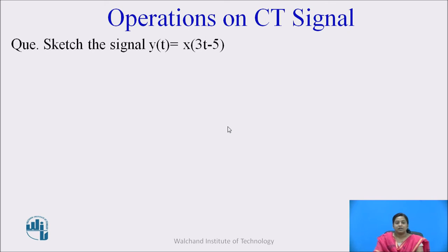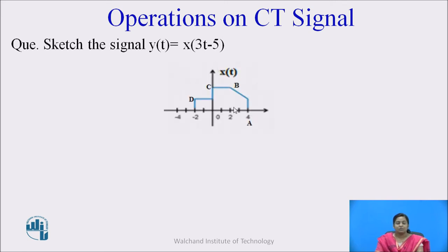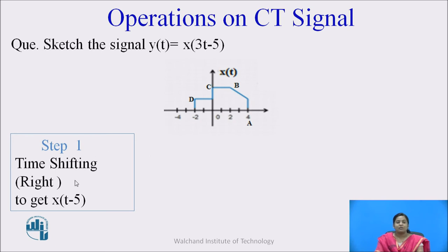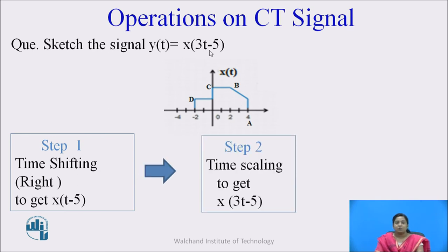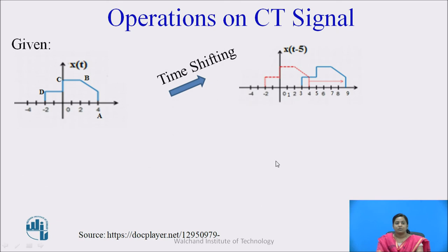Now let us see the second example: sketch the signal y(t) = x(3t - 5), where x(t) is given. Step 1: apply time shifting towards the right side — we want x(t - 5), so shift this signal towards the right side by 5 units. Step 2: apply time scaling to get x(3t - 5), with a scaling factor of 3. Applying the shift moves the entire signal to the right by 5.